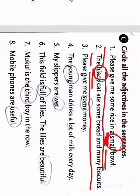Then 3: Please give me some money. So how much money do you need? Some money. So this is your answer, some money. Fourth is: The young man drinks a lot of milk every day. So the man, how is he? Young. Young man. So adjective is young.